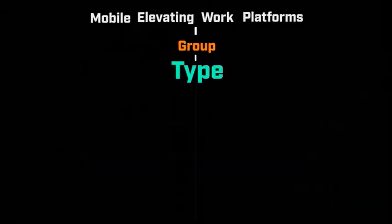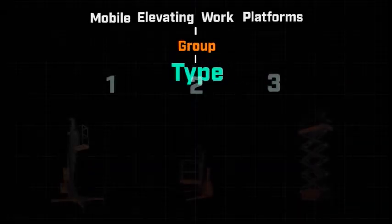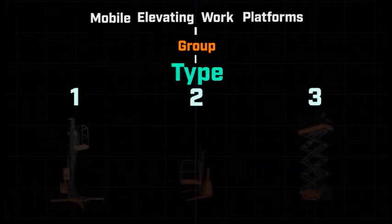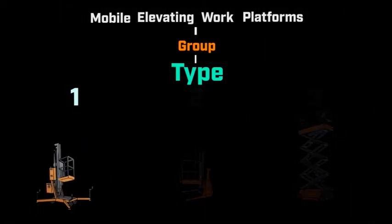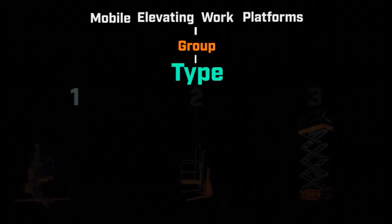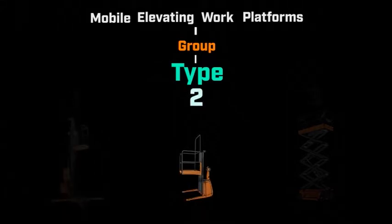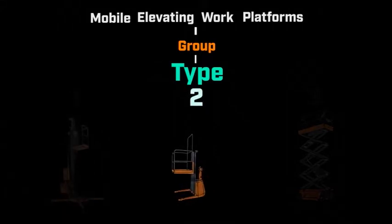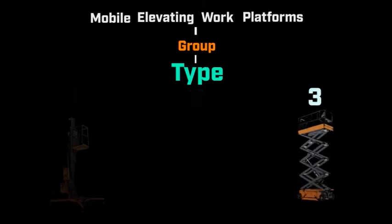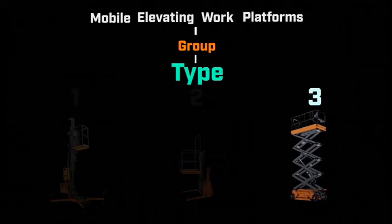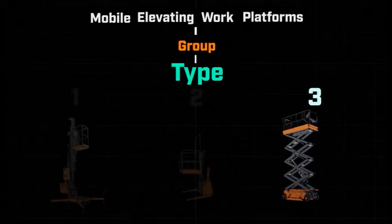Within these groups, there are three types based on how the machine can travel. Type 1 travel is only possible in the stowed position. Type 2 travel can happen while elevated, but is controlled from the chassis. And Type 3, the work platform can travel in an elevated position and be controlled from the platform.